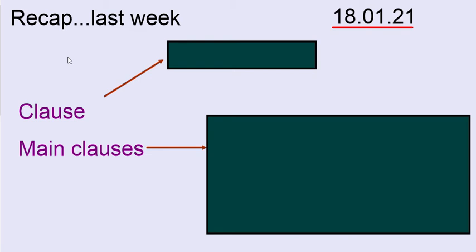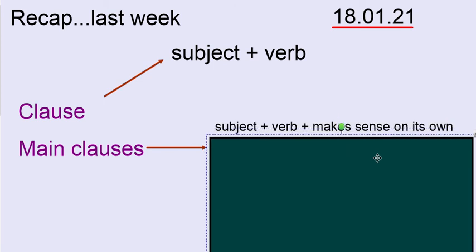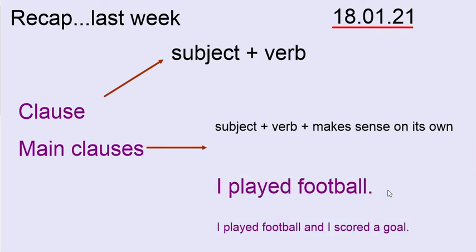Recapping on last week — we started the week by looking at clauses. I wonder if you can remember what a clause is. Hopefully you're thinking to yourself: subject and verb. Remember, the subject is normally a noun or a pronoun, and the verb is our action or doing word. What can you remember about main clauses? Hopefully you've remembered they contain a subject and a verb and that they make sense on their own. For example: 'I played football' is a main clause. 'I played football and I scored a goal' — I've used a coordinating conjunction to link together two main clauses.